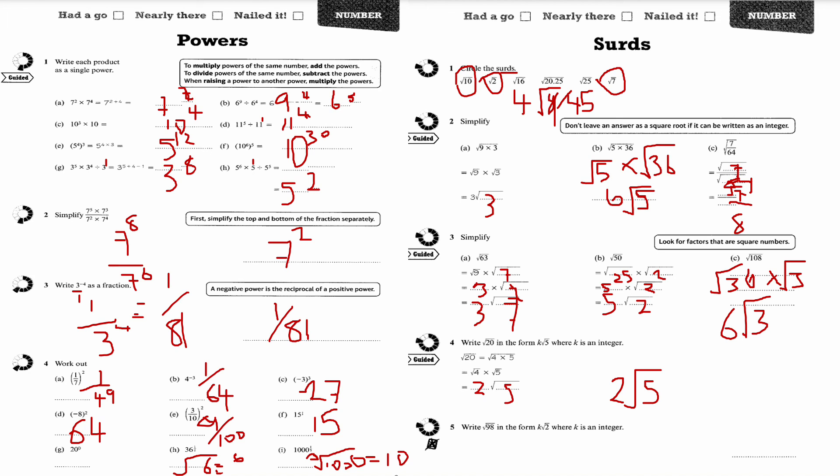Question number 5. It's a non-calculator. Write root 98 in the form K root 2. Root 98 is root 49 times root 2. Root 49 simplifies to 7, because 49 is a square number.